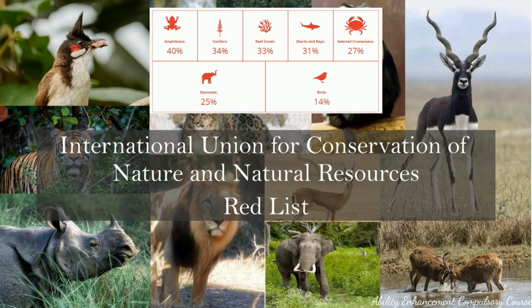The red list was established by IUCN as a tool for assessment of the conservation status of various species around the world, and it is a very critical indicator of the health of the world's biodiversity. It tells us how many species are endangered, how many are critically endangered, and in this format there are various categories given for all the different types of species.